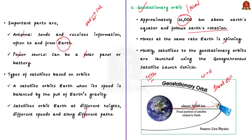Most of us have seen DTH — Direct to Home services — where an antenna kept above the house receives signals from satellites. The position and alignment of our antenna is fixed, so the satellite's signal must be in the same position at all times to receive signals 24 hours a day. The satellite and Earth rotate in the same direction and at the same axis, keeping the satellite in the same relative position. This is one of the key applications of geostationary orbit.